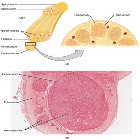The synapses generated by a Mauthner cell are so powerful that a single action potential gives rise to a major behavioral response. Within milliseconds the fish curves its body into a C shape, then straightens, thereby propelling itself rapidly forward. Functionally this is a fast escape response, triggered most easily by a strong sound wave or pressure wave impinging on the lateral line organ of the fish. Mauthner cells are not the only identified neurons in fish — there are about 20 more types, including pairs of Mauthner cell analogues in each spinal segmental nucleus.